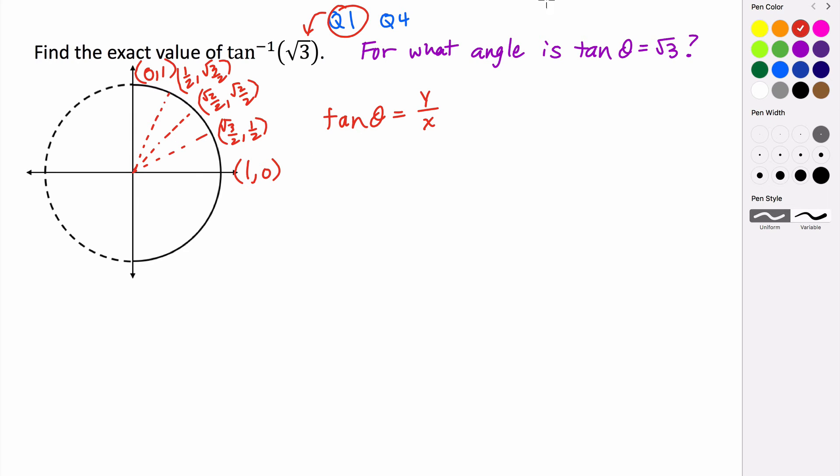So we want to know, when we take the quotient of y divided by x, which of these results in a value of √3. We know that √2/2 divided by √2/2 is 1, so it's not going to be there. This is going to be 0 here at 0 radians, and this is going to be undefined at π/2. So that leaves us just with π/6 or π/3.